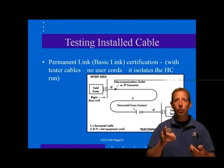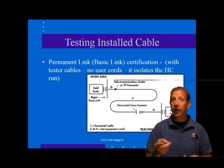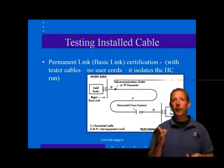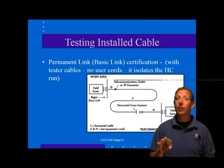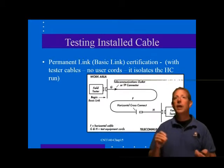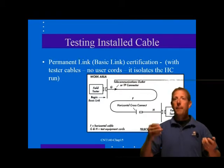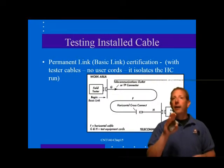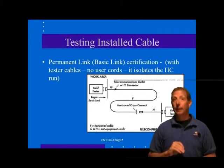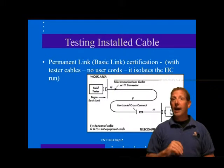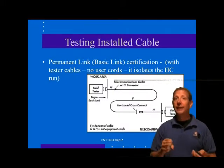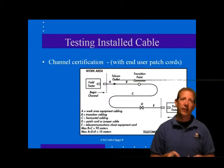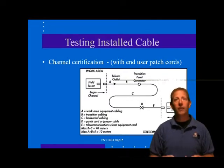Which link test should you use? Permanent link certification is probably sufficient in most cases of new installations, ensuring the 90-meter maximum of horizontal cable is performing to specifications. The permanent link test is considered the most reasonable performance testing standard for a turnkey cable system installation, because the vendor may have little or no control over the cables used to connect to the equipment. After the network equipment is installed and connected, it will be easiest and most useful to do channel testing.